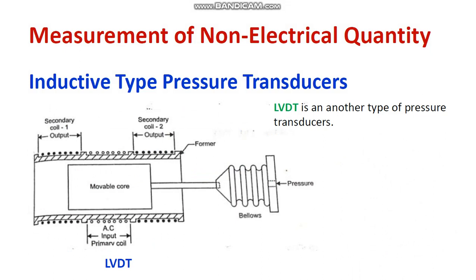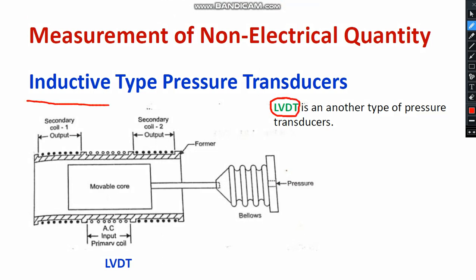Let us discuss another type of pressure measurement device — LVDT. LVDT is categorized under inductive type pressure transducer. You can see the movable core, and pressure is applied externally to the bellows. With respect to the application of pressure, the bellows try to move the shaft and the movable core position changes. Initially the movable core is at the middle position. If the movable core is at the middle position, the differential voltage E1 and E2 are relevant to measuring the maximum pressure.